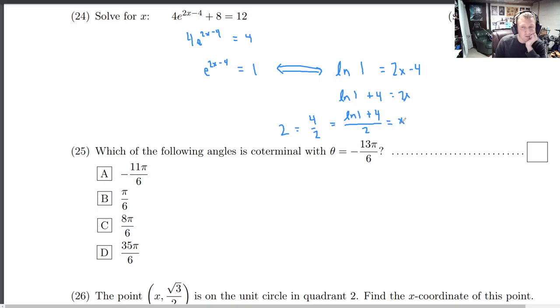So if you plug in 2 here you're definitely gonna get what you want. e to the 2 times 2 minus 4 plus 8 equals 12. This is e to the 0th which is 1 which means we've got 4 plus 8 equaling 12 and that's all you found right there.